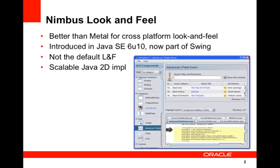Nimbus is a polished cross-platform look and feel that was introduced in the Java SE 6 Update 10 release. It was designed to be a replacement for the Metal look and feel and is now part of the standard look and feels, which you can find in javax.swing.plaf. The screen capture shown here is from Swing Set 3 and it shows the Nimbus look and feel.